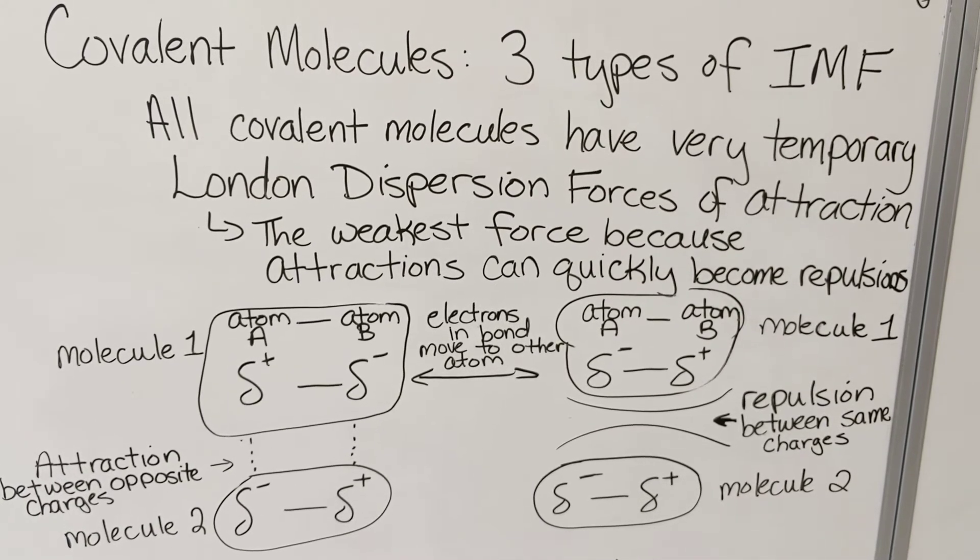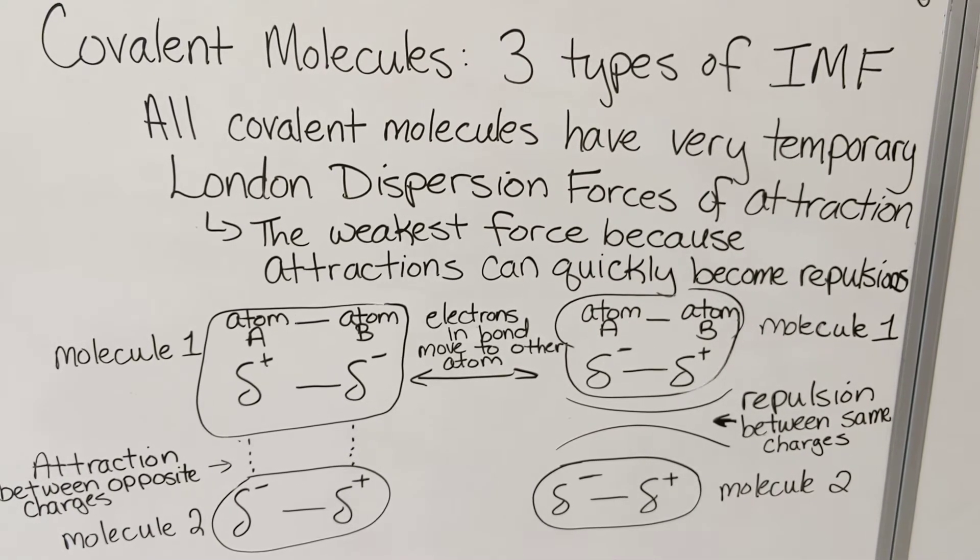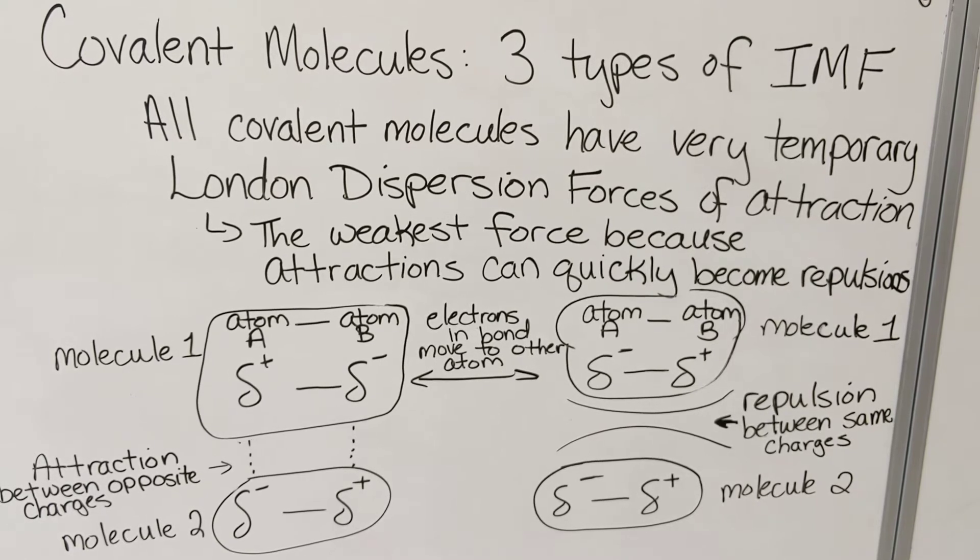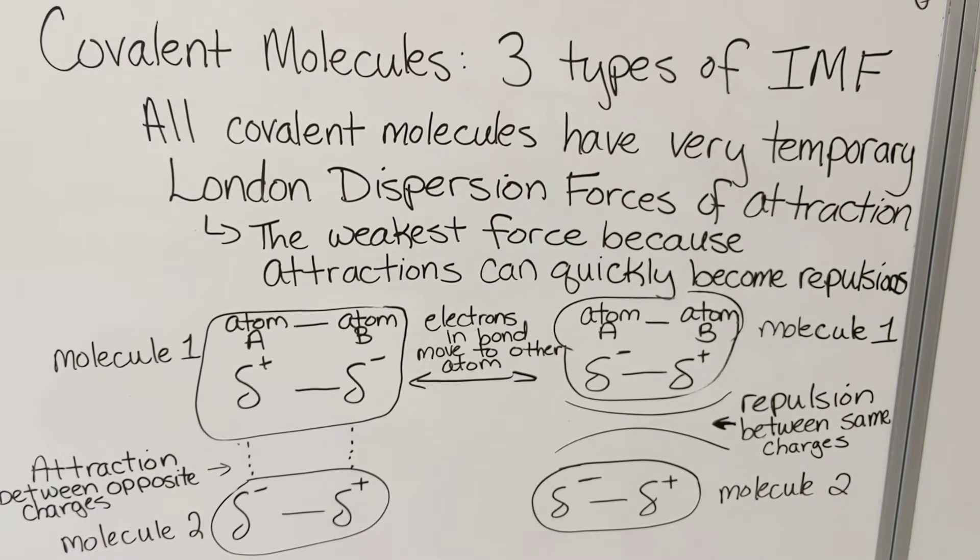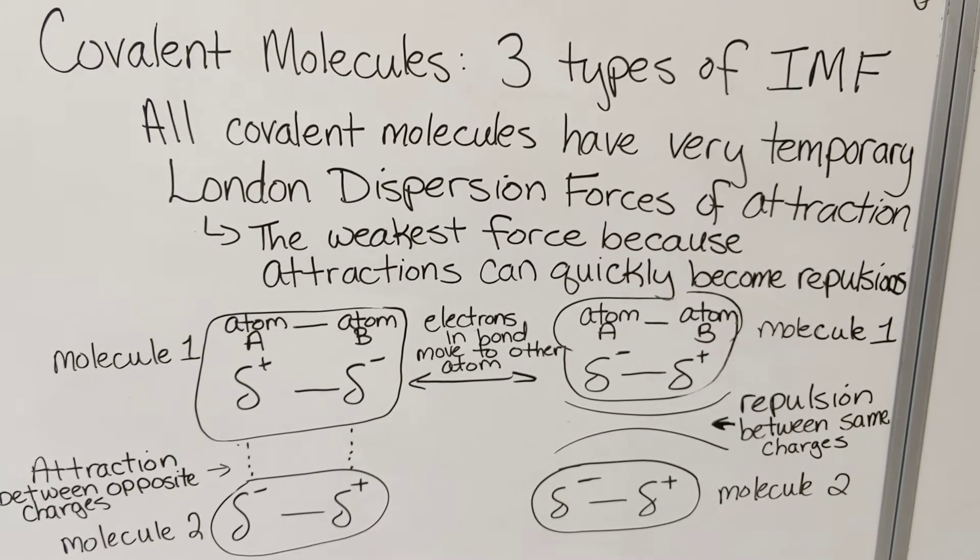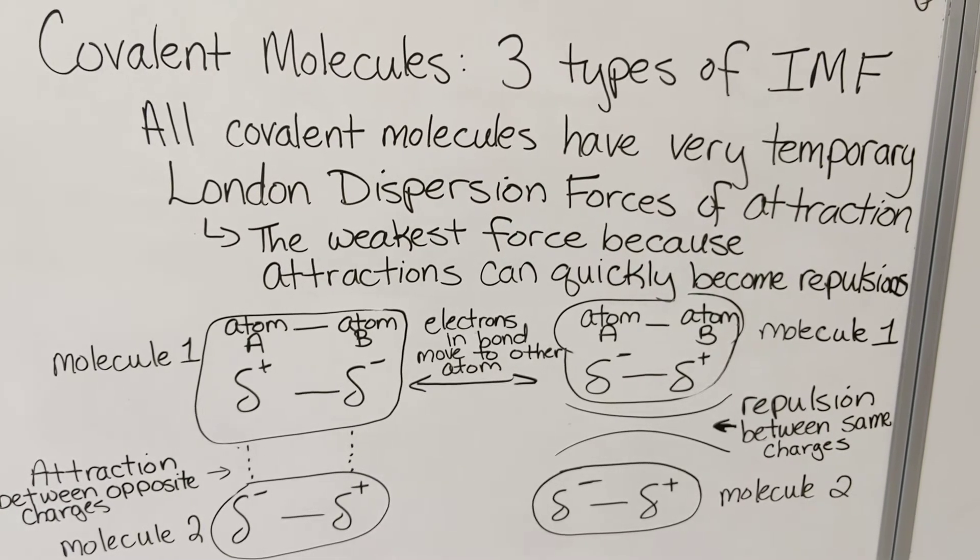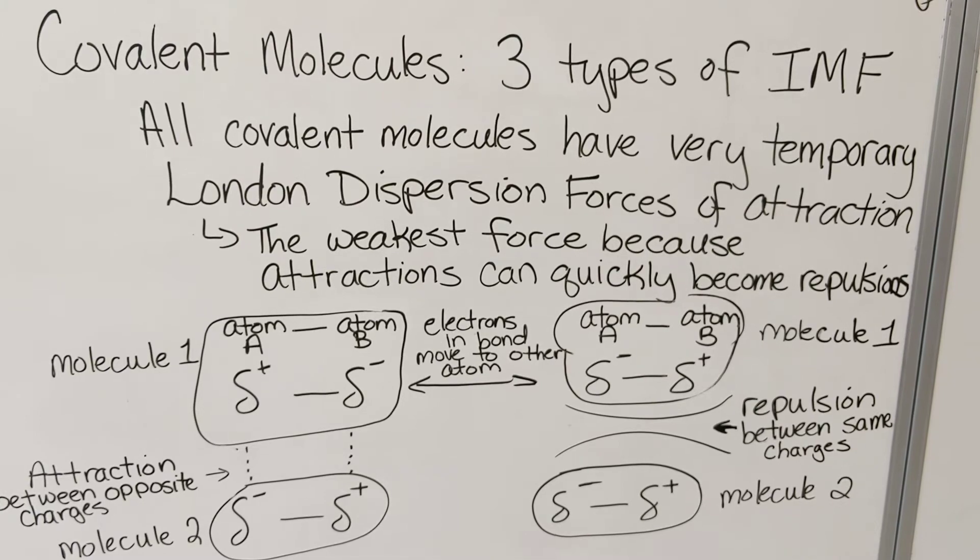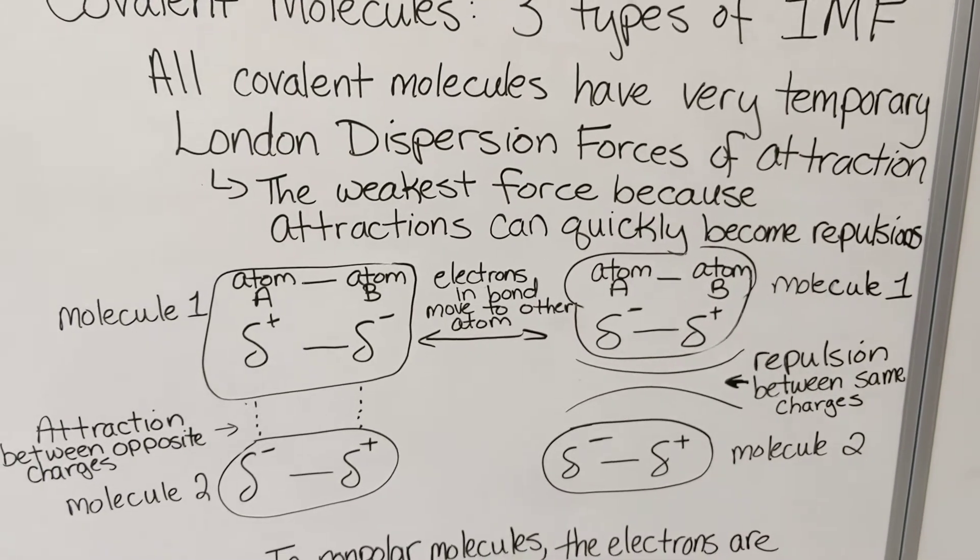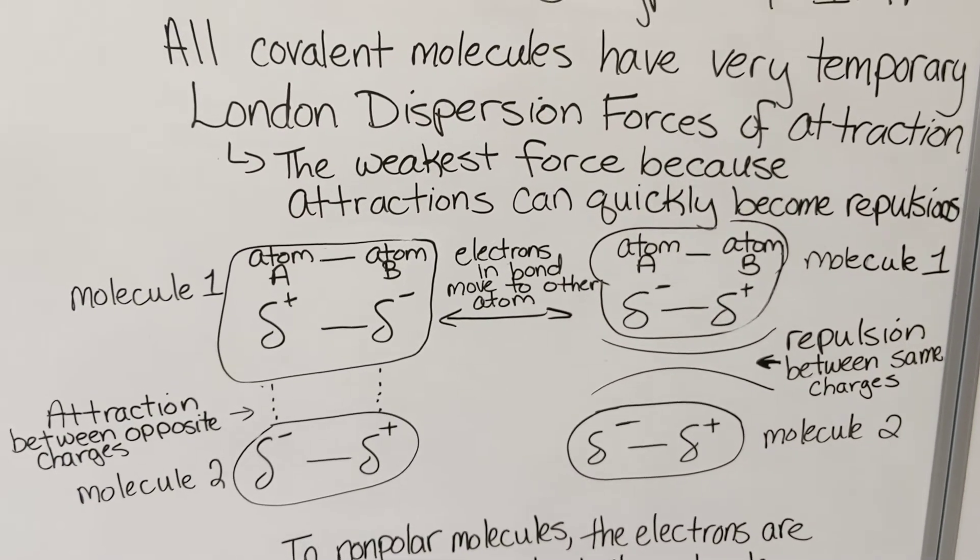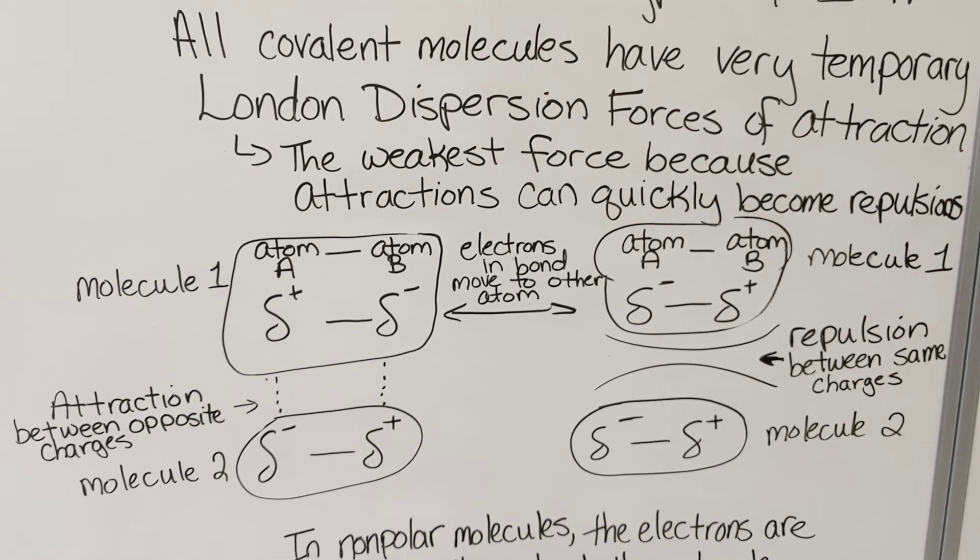All covalent molecules have a very temporary force of attraction between them, known as London dispersion force of attraction. This is the weakest force because the attractions can quickly become repulsions. Here I've drawn an example where we have two molecules at moment 1.